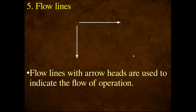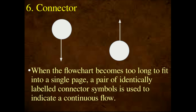Flow lines: in a flowchart, the flow of operation is indicated by arrow-headed lines — arrow-marked, arrow-headed lines — that show the flow of operation. These are called flow lines. Connector: the connector symbol indicates that when a flowchart is too long, we can break the page and continue. We mark a symbol, for example X, at the break point, and use the same symbol to continue on the next page. This is the connector.